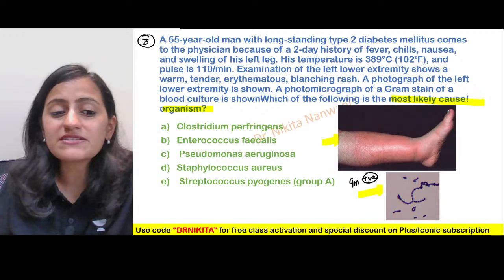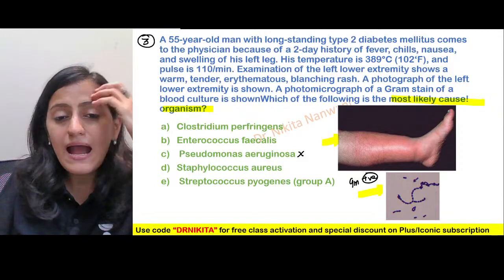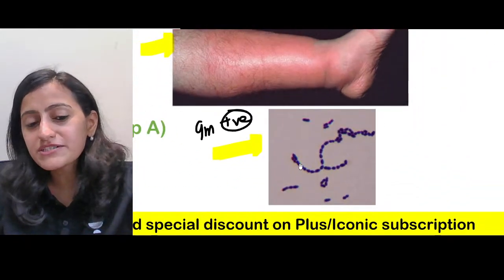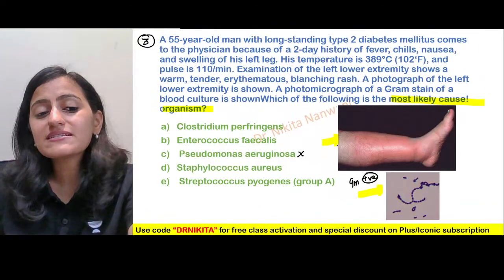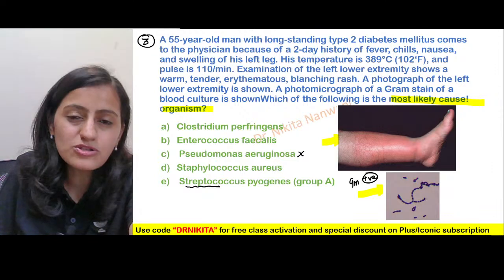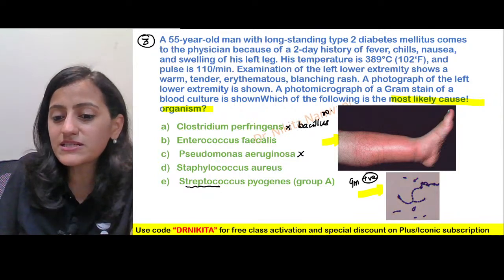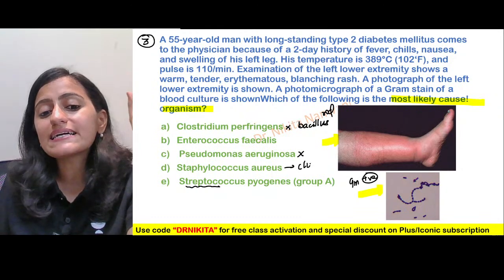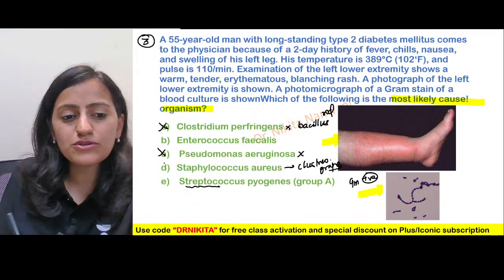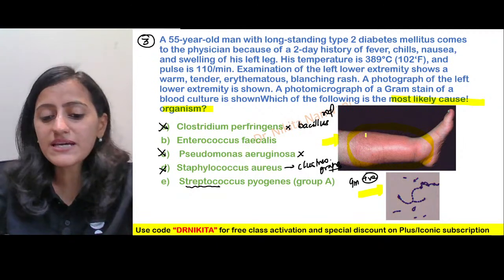Since it's gram-positive, Pseudomonas (gram-negative) is ruled out. The appearance is gram-positive cocci in chains — that points to Streptococcus (or Enterococcus, which falls under the Streptococcus group). Clostridium is ruled out because it is a bacillus (rod-shaped). Staph aureus is gram-positive cocci in clusters (grape-shaped). So clostridium, pseudomonas, and staph are all ruled out.